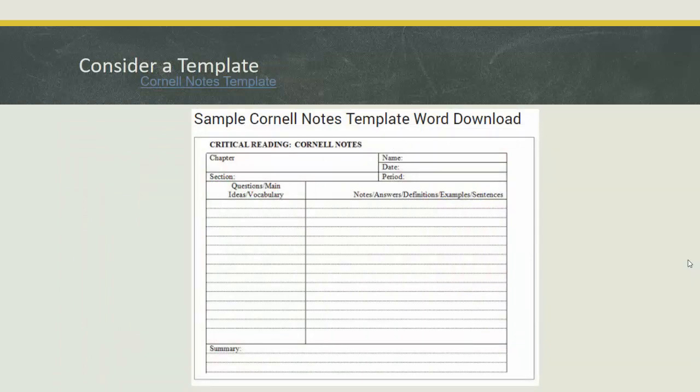Consider a template. So maybe you're just not good at drawing those lines for the Cornell notes before you begin. Word, Microsoft Word has a Cornell notes template that you can download and you can print however many of them that you want and you could put them inside of a binder. And that way that part of it is kind of already done for you. You just have to fill out the actual notes. Also if you go on Amazon they actually sell notebooks that are already broken apart in the Cornell notes style. So you could just buy a Cornell notes notebook and that way again you don't have to worry about dividing your paper up.